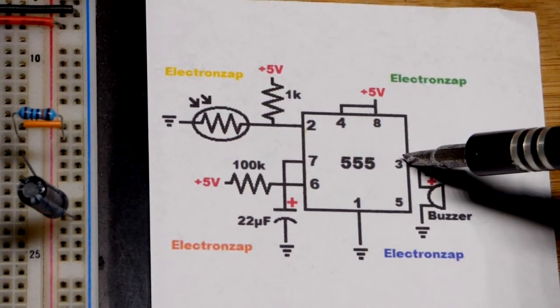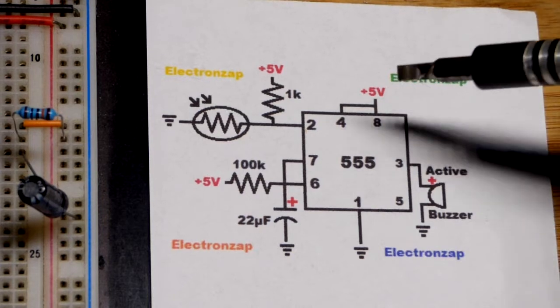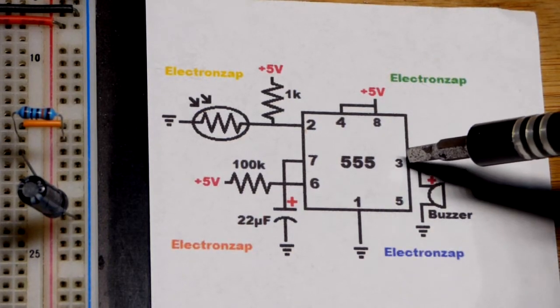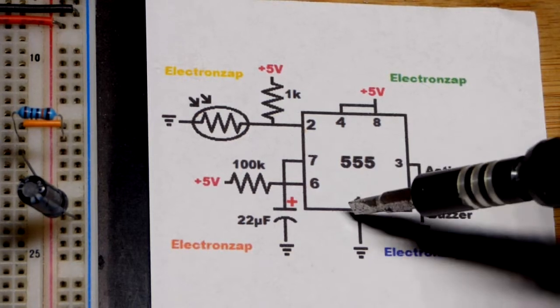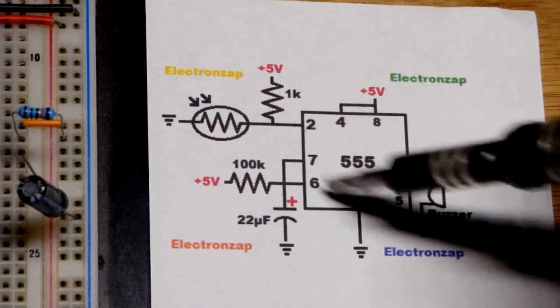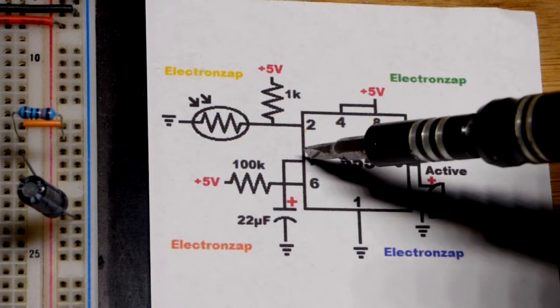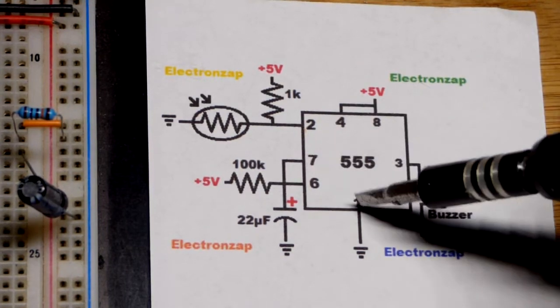We have pin 3 here. Normally it's dim enough, such as this lamp that I'm using. This is its brightest setting, it's not bright enough, so the output is low. While the output is low, pin 7 connects to ground.